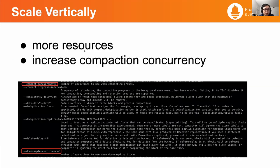Let's talk about the solutions for the backlog. In order to solve the backlog problem, we definitely want to scale the compactors more. The easiest way is to simply scale vertically, adding more computation resources to the compactor instances. Another way is to increase the compactor concurrency. There are two flags provided by the Thanos compactor: one is the compaction concurrency, and another is the downsampling concurrency. We can tune these flags to make the compactor instance more powerful.